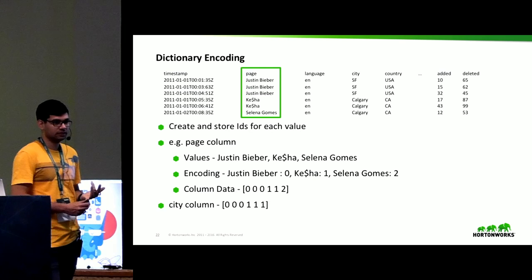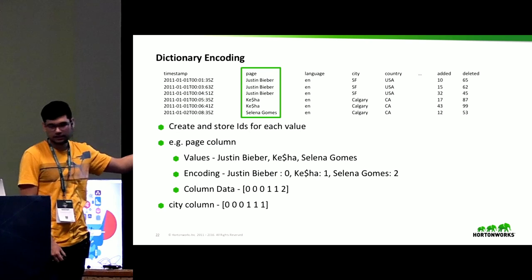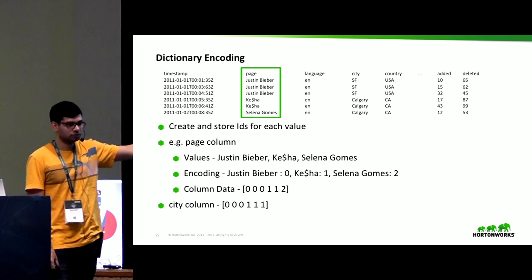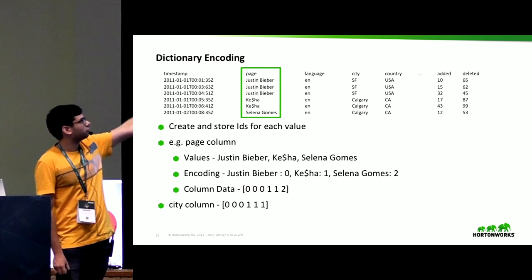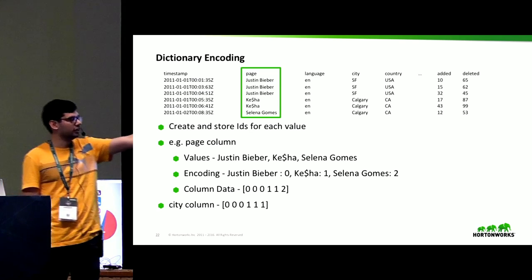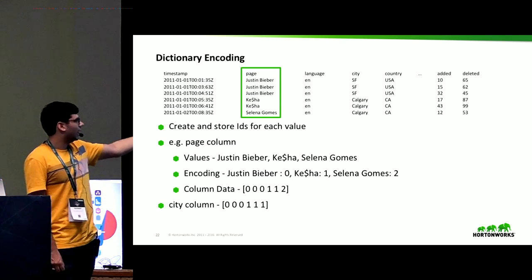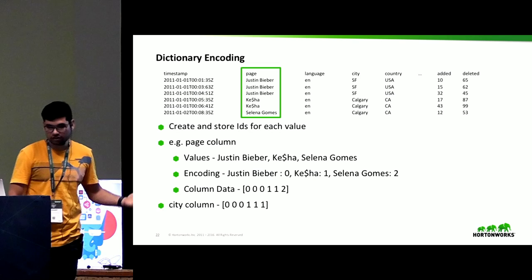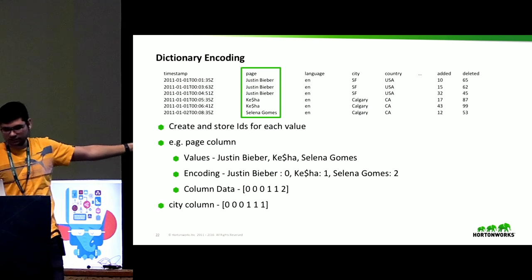The second technique Druid uses is dictionary encoding. Instead of storing row columns as-is, it creates dictionary encoding for these columns. It assigns IDs to each value — for example, for the page column with Justin Bieber, Kesha, and Selena Gomez, it will assign IDs of 0, 1, and 2. So instead of storing repeated strings, it stores a dictionary and then the column data as a sequence of those IDs compressed using different compression techniques. Similarly, each column is compressed using this dictionary encoding technique.